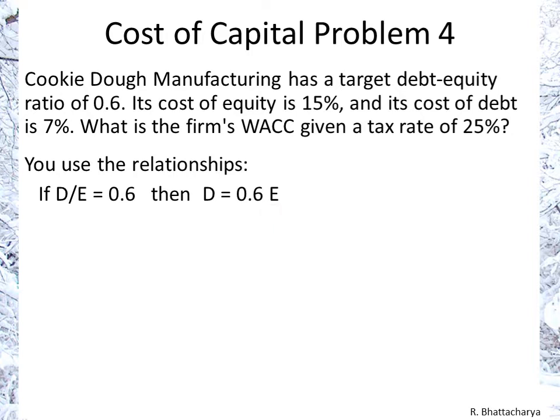For example, if equity is 10, debt is 6; if equity is 100, debt is 60; and so on. It doesn't matter exactly how high debt or equity is — we know that debt is 60% of equity. So we can calculate the weight of debt and the weight of equity from this relationship.